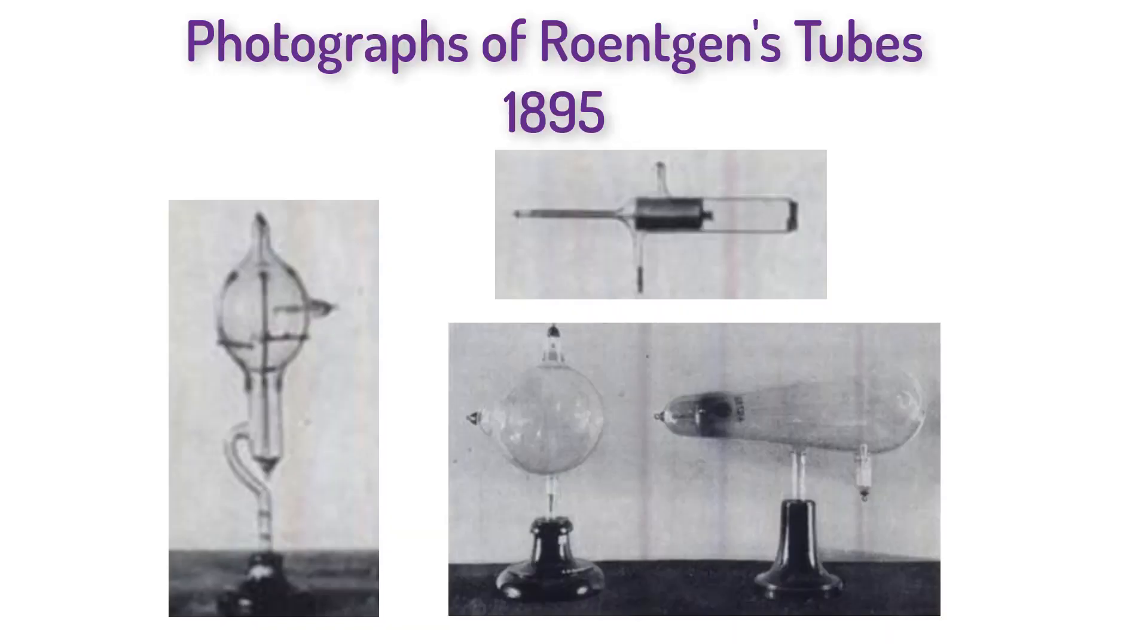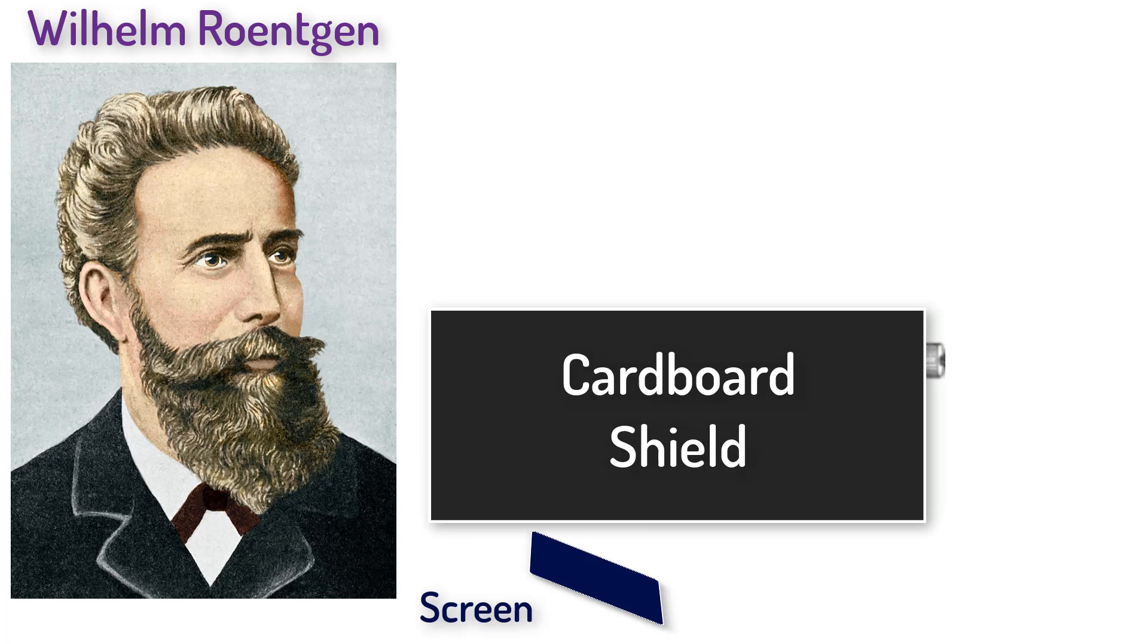In October of 1895, Röntgen began to buy and build a variety of different vacuum tubes. This brings us to the fateful night of November 8th, 1895. Like Leonard, Röntgen covered a tube with thick cardboard, turned off the lights, and excited his vacuum tube.